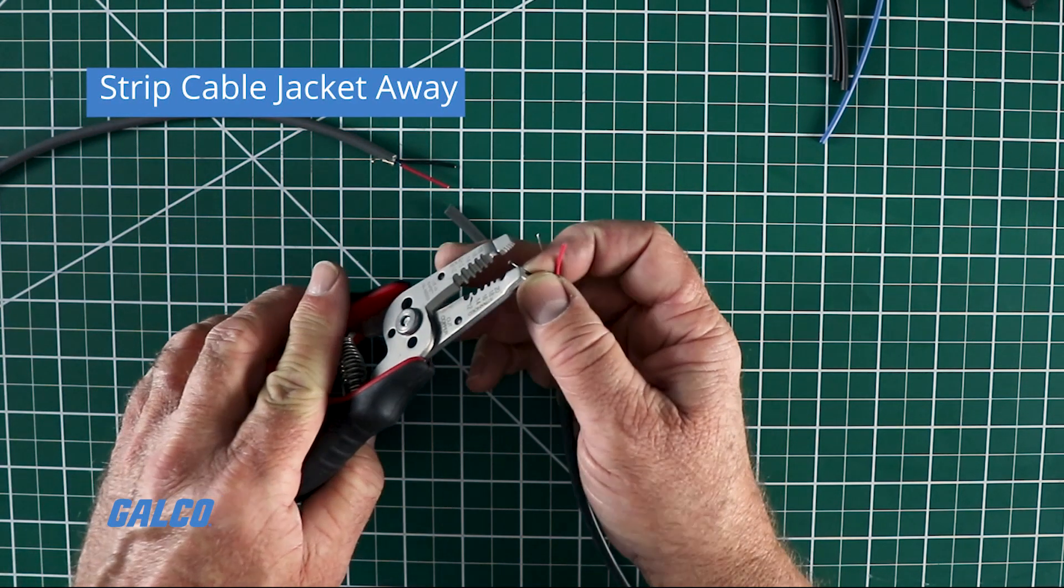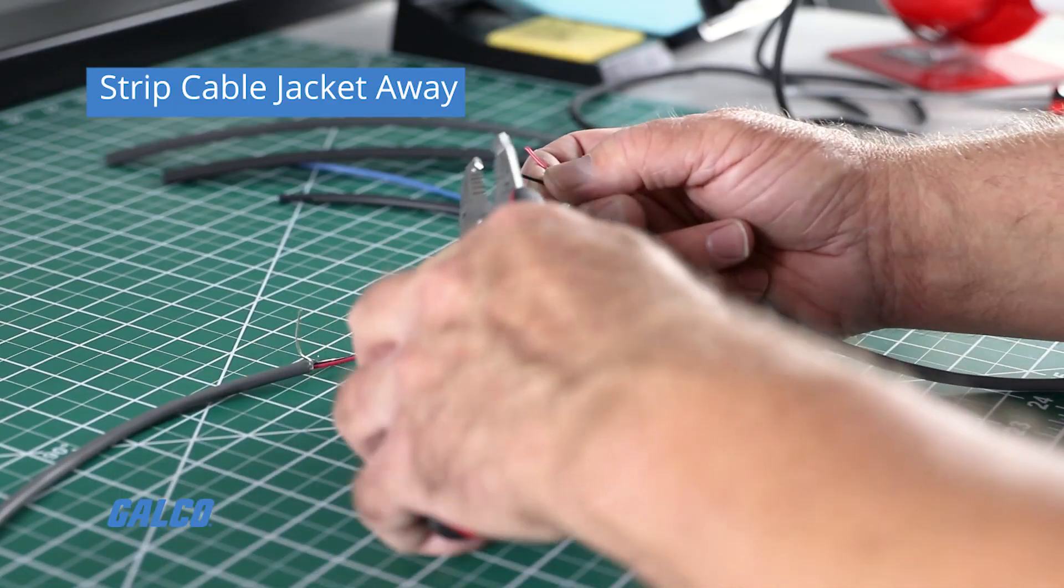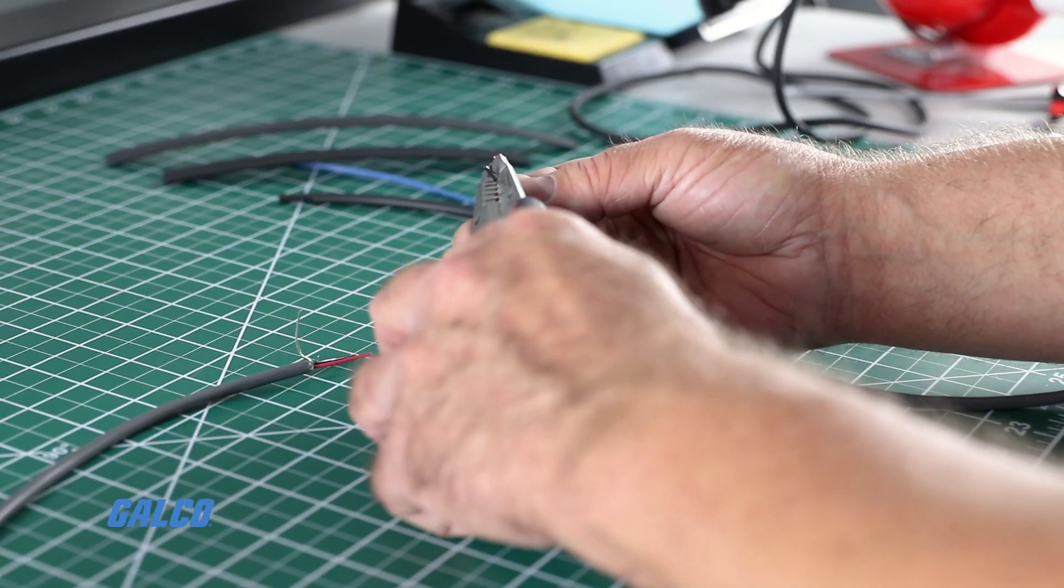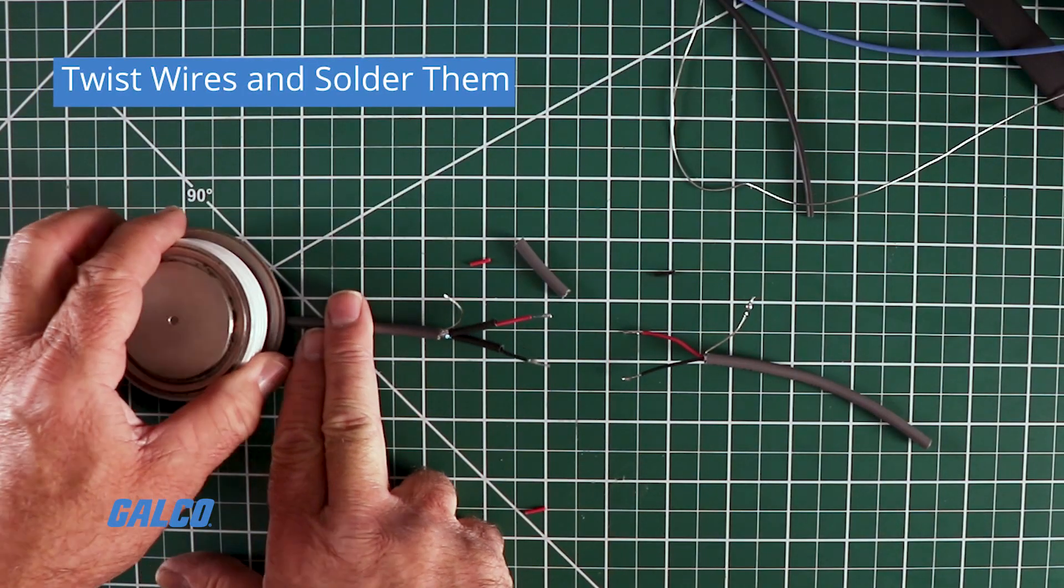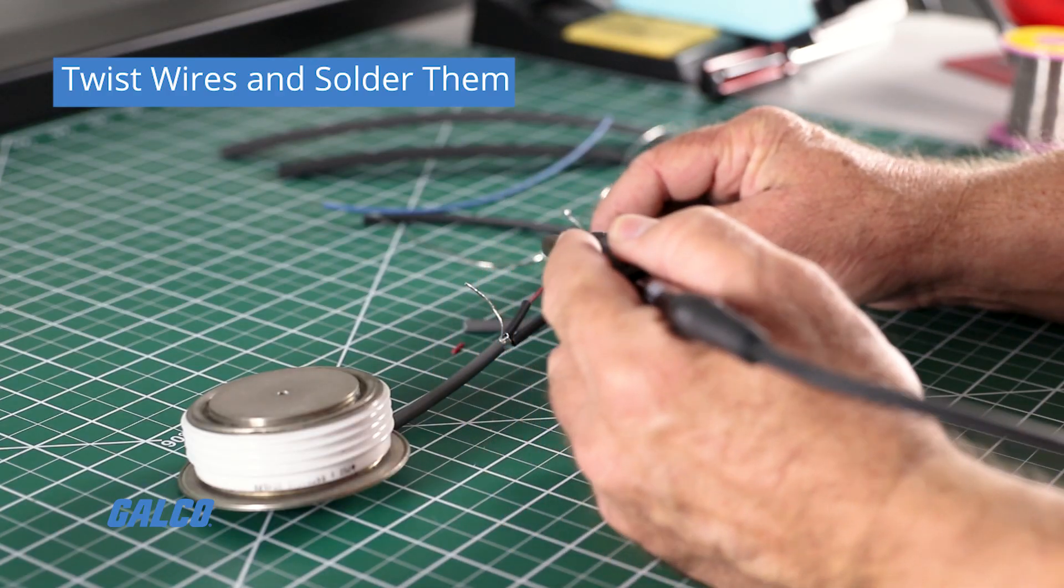Strip a short length, three-eighths to a half inch of the cable jacket away to reveal the inner wires. Then twist the wire ends together and solder them to rejoin the connection.